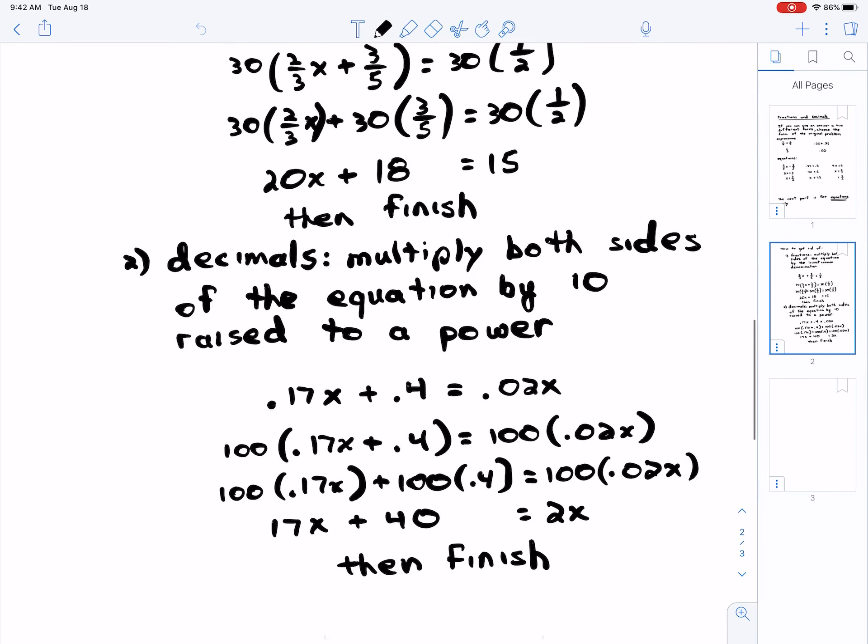Decimals, what do you do? You multiply both sides of the equation by 10 raised to a power - in other words, 10, 100, 1,000, etc., depending on how many decimal places you're trying to get rid of. If you're trying to get rid of one decimal place, you multiply by 10; two decimal places, 100; three decimal places, 1,000, etc.